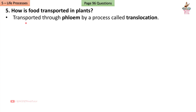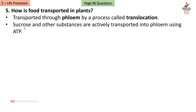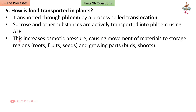Question 5: How is food transported in plants? Answer: Transported through phloem by a process called translocation. Sucrose and other substances are actively transported into phloem using ATP. This increases osmotic pressure, causing movement of materials to storage regions — roots, fruits, seeds — and growing parts like buds and shoots. Food can be transported both upward and downward depending on plant needs.